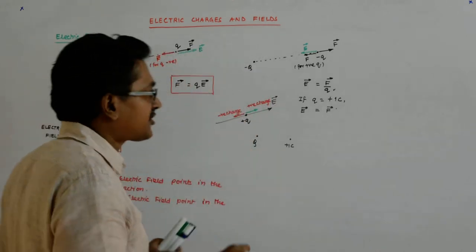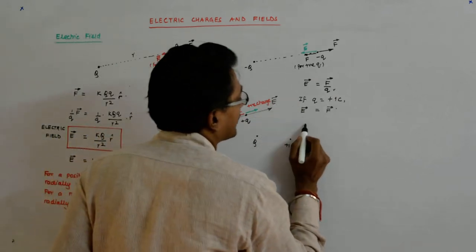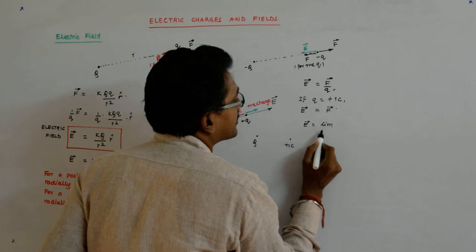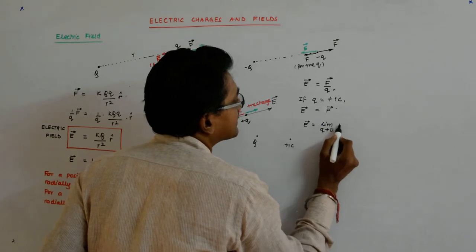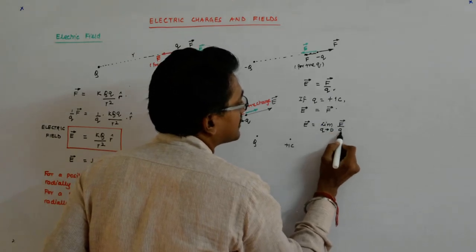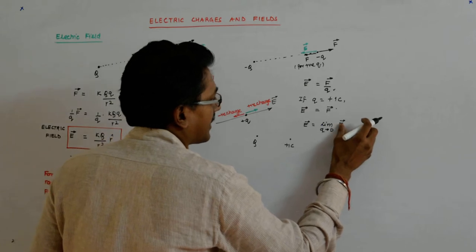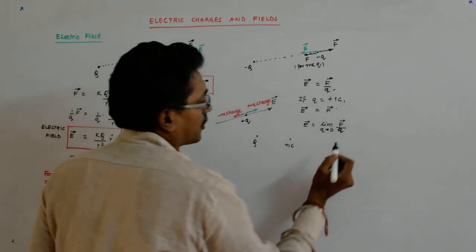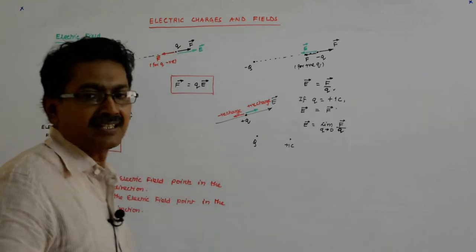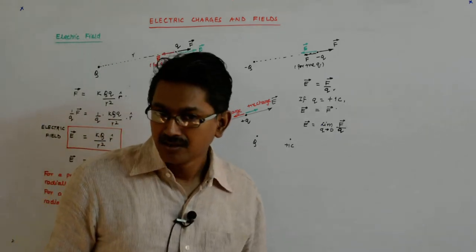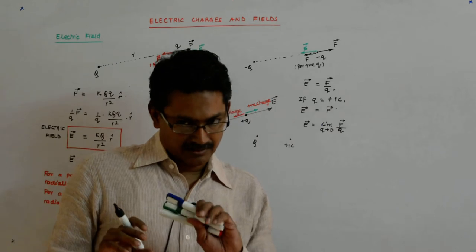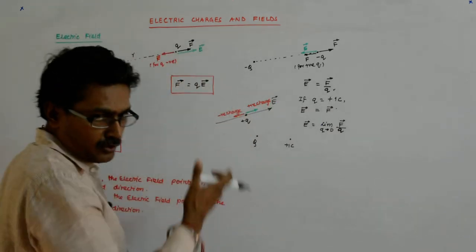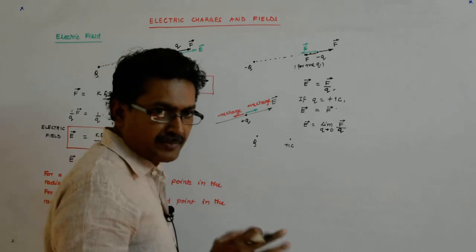And this charge should be as small as possible. So you will find the definition of electric field as F upon Q, where Q tends to 0, it is smaller than the smallest that you can imagine. Theoretically, E can be equal to F, but we do not do that.